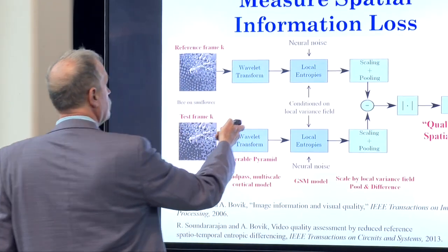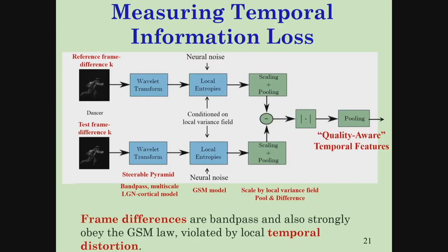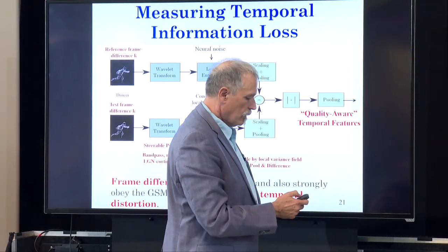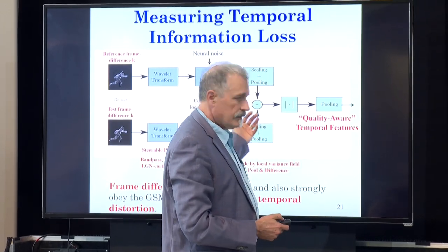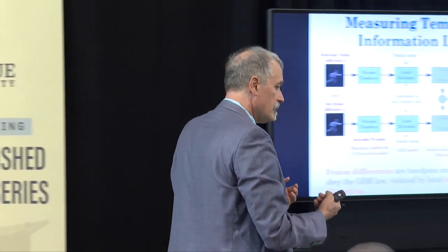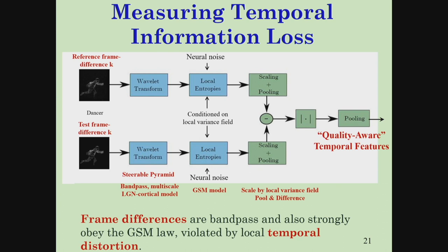We do the same diagram but for frame differences — two frames in sequence. Video is a series of frames; we take differences between them. They're similar, so they have reduced entropy already. We do the same processes to capture temporal information. So we have a bunch of spatial quality-aware features and a bunch of temporal quality-aware features, all of them exploiting the four special properties I talked about: multi-scale, and images obeying these statistical laws which we can exploit.